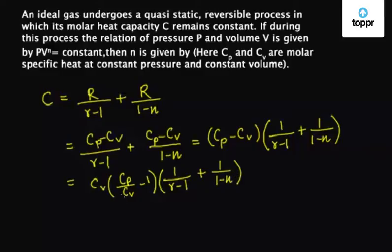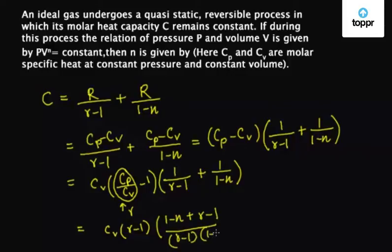Now Cp upon Cv is nothing but gamma, so we have Cv upon gamma minus 1, and we solve this to get minus n plus gamma minus 1, gamma minus 1 into 1 minus n.